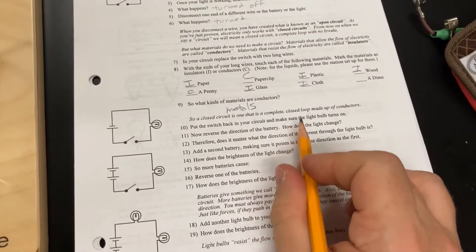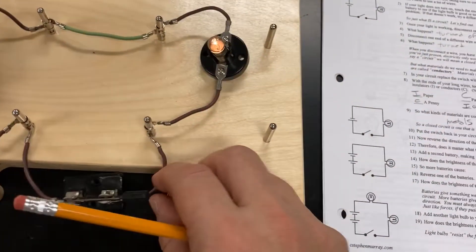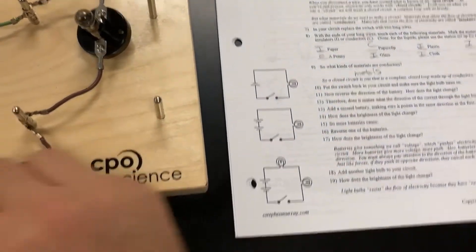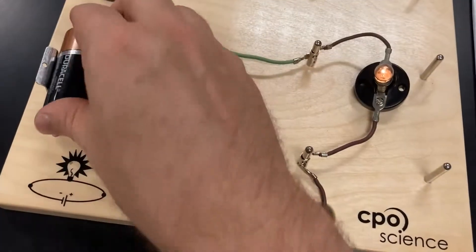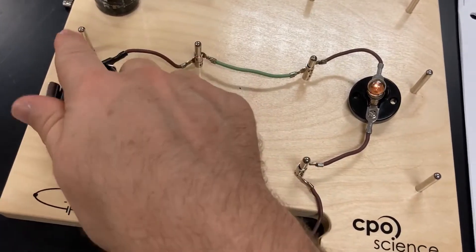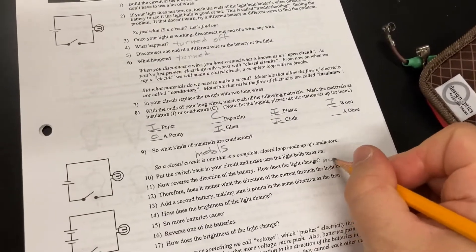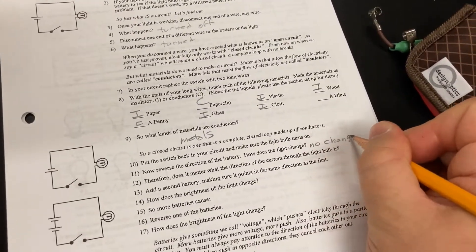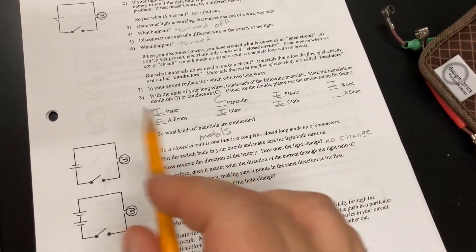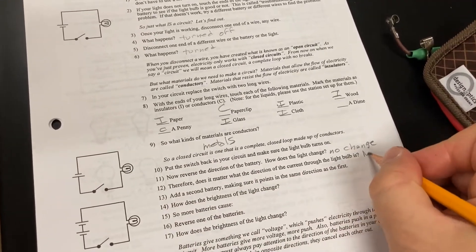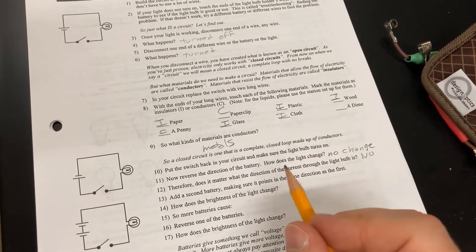Now, put the switch in your circuit. It makes sure the light bulb turns on. Okay. Reverse the direction of the battery. Still on. Has the light changed? No change. Therefore, does it matter what the direction of the current? And the current is the electricity that's flowing. And there's no difference. In this case. There's other things that we'll find out.